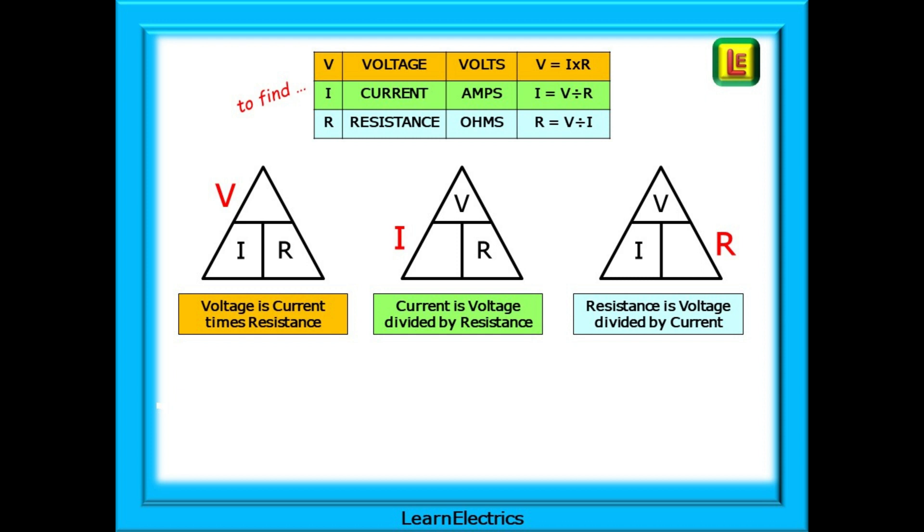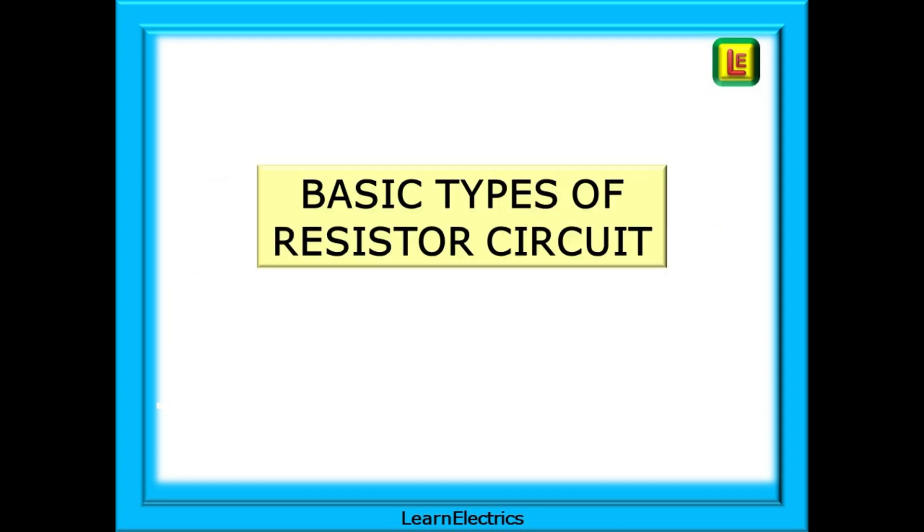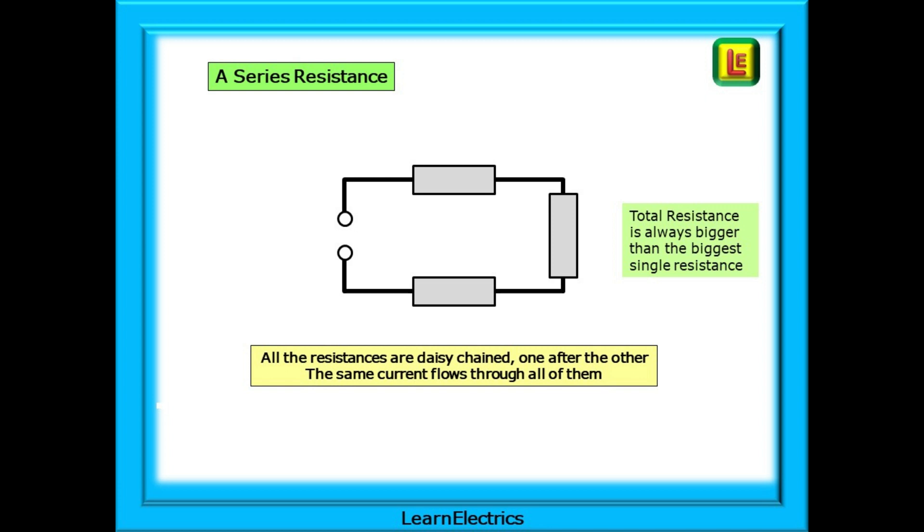You must understand the basic types of resistor circuit. In an exam, expect to be asked questions on resistor circuits, easy marks towards a pass if you get it right. Shown here is a series resistance, one resistor after another, like a daisy chain. The total resistance in this circuit is the sum of each of the resistances, and will always be bigger than the biggest resistance. Add more resistors in series, and the total resistance will go up.